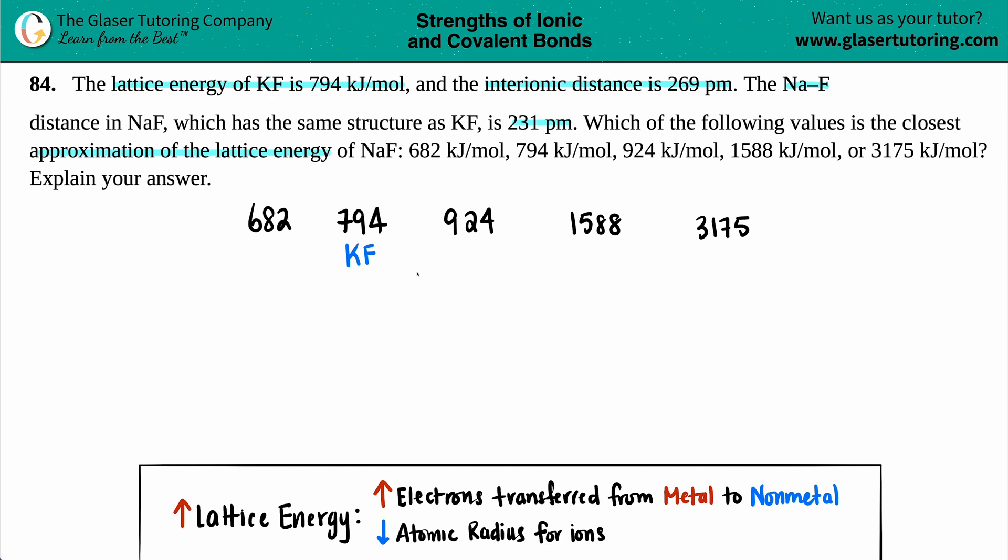So let's first write out that balanced equation. So we have potassium fluoride, KF. And if you're trying to find out a lattice energy, it's the amount of energy needed to sever that bond, and you have just now potassium chilling and fluorine chilling just independently.